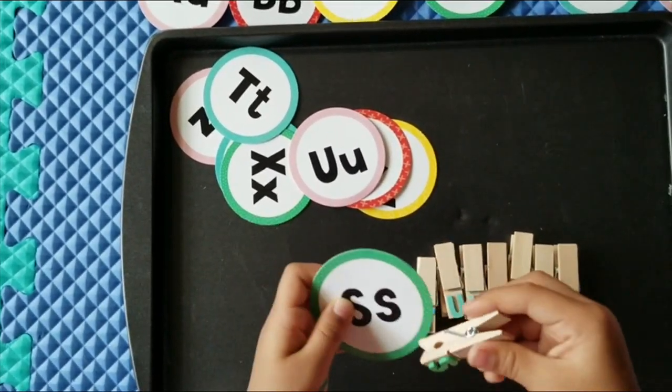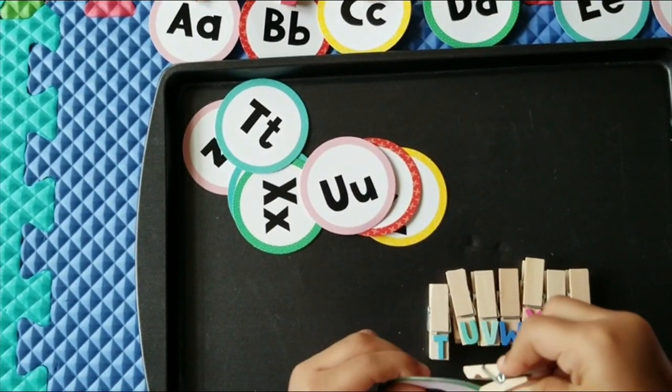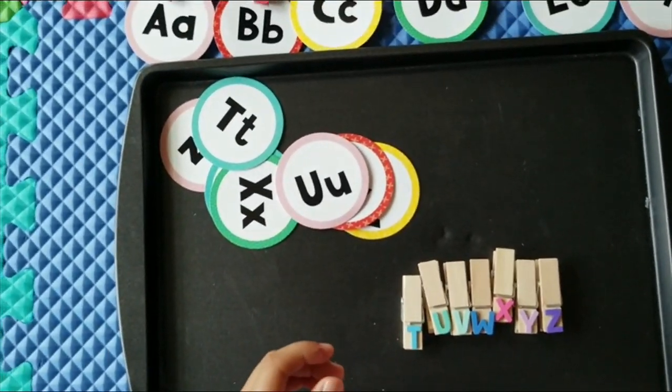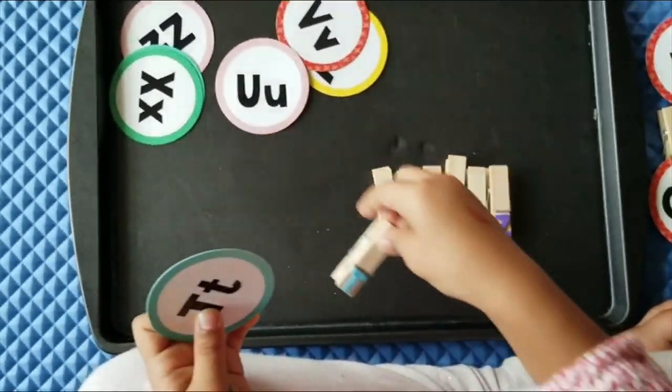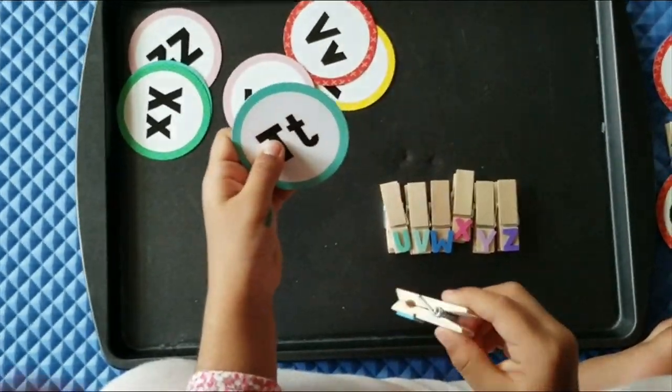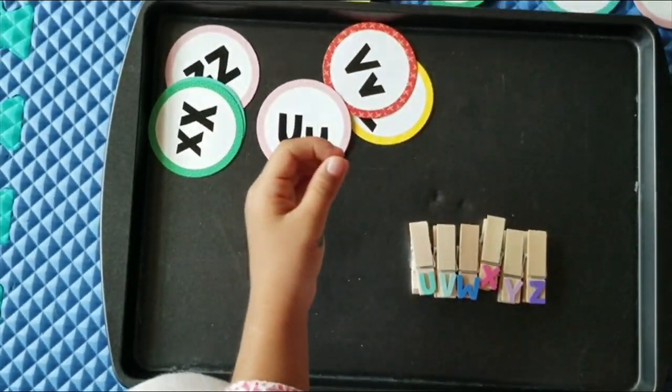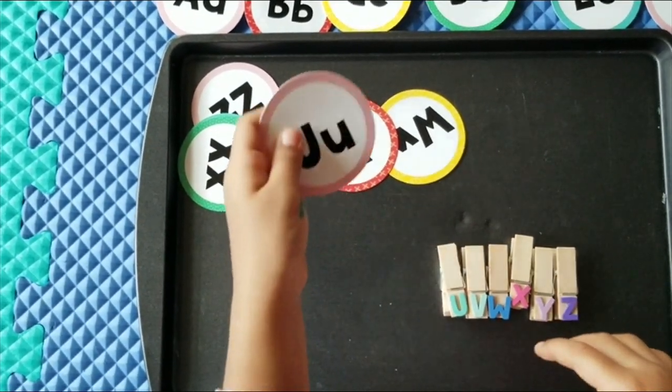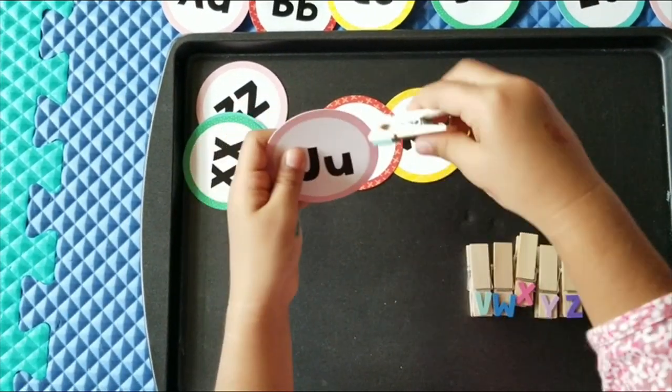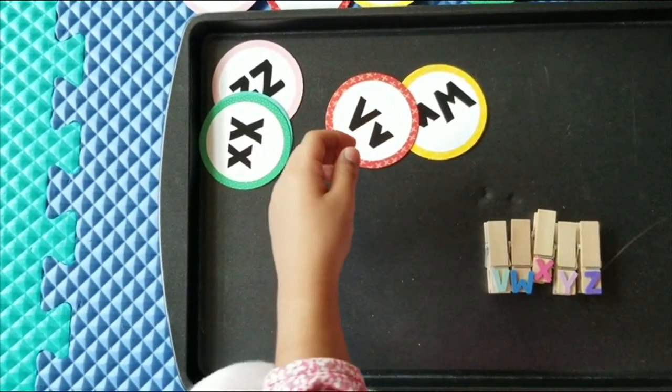This is the letter T. It sounds T. Turtle. This is the letter U which sounds U. Umbrella.